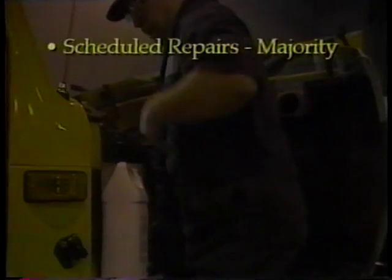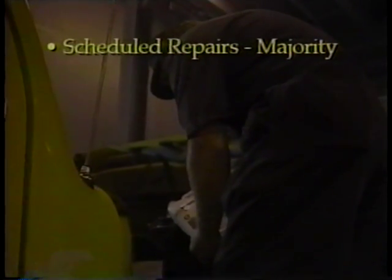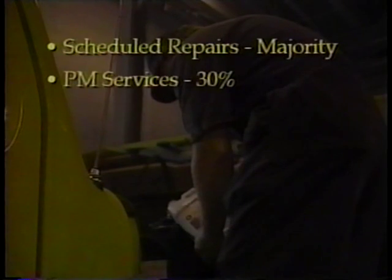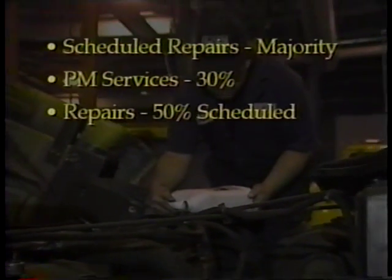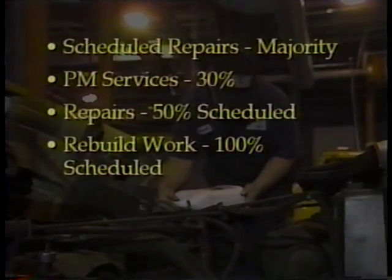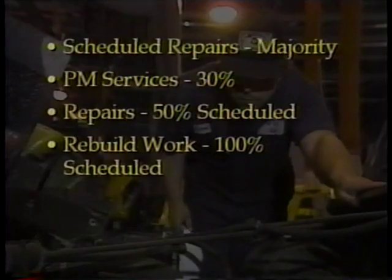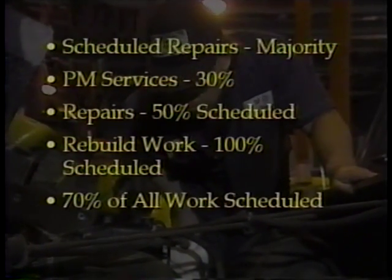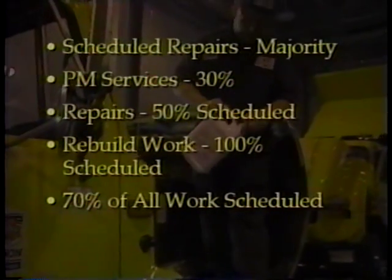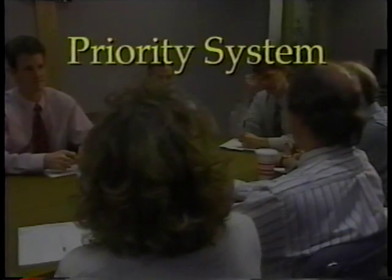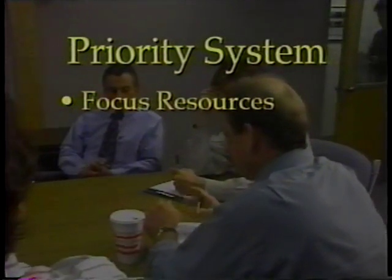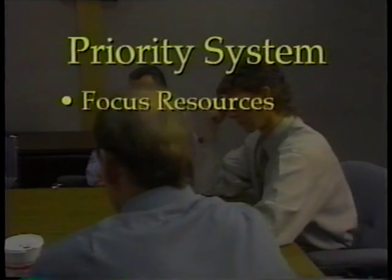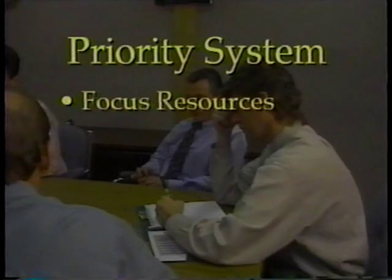With an effective PM program and scheduling system, scheduled repairs should make up the majority of the workload. PM services alone should account for 30% of shop work. At least 50% of the repair work and 100% of the rebuild work should be scheduled. In total, scheduled work should be nearly 70% of all work performed. Establishing a priority system can help the shop superintendent focus resources on jobs with the greatest need and impact on overall equipment service levels.